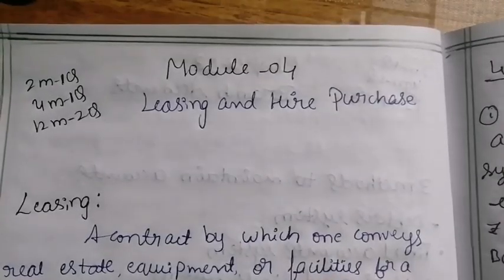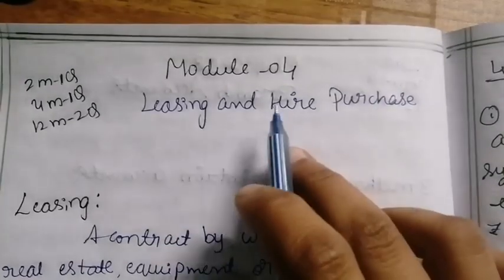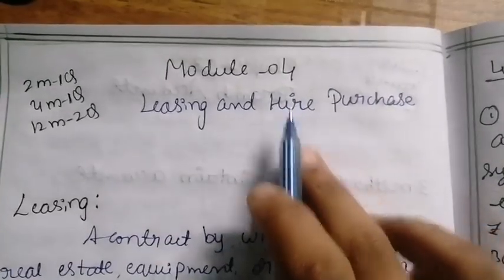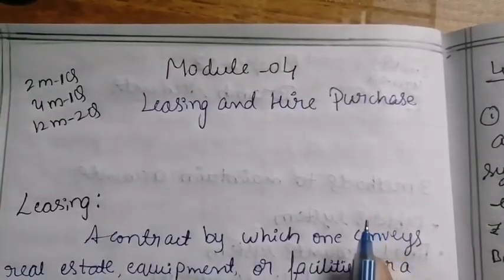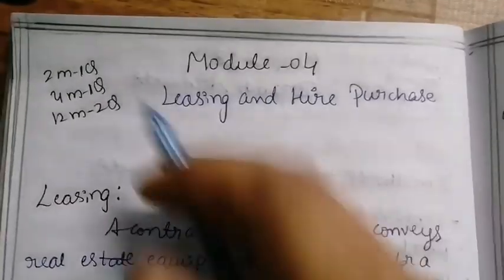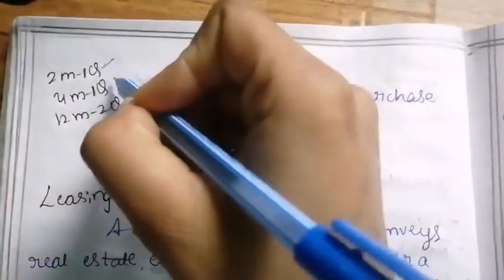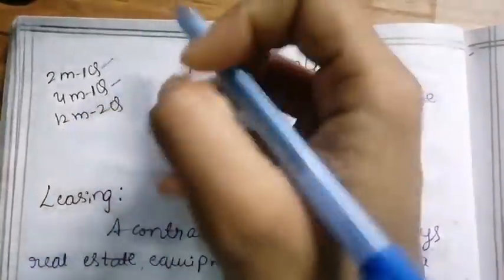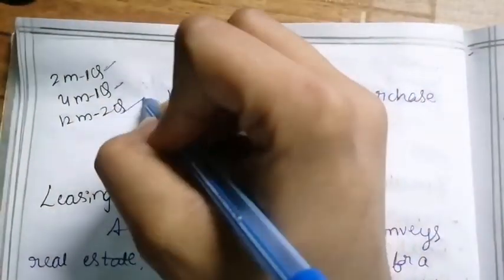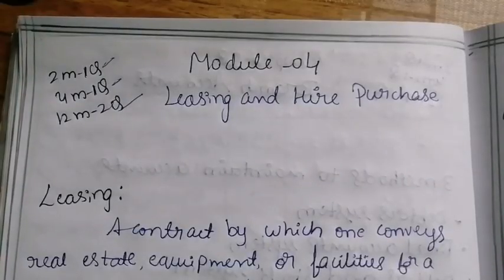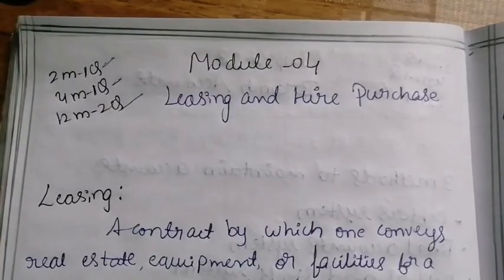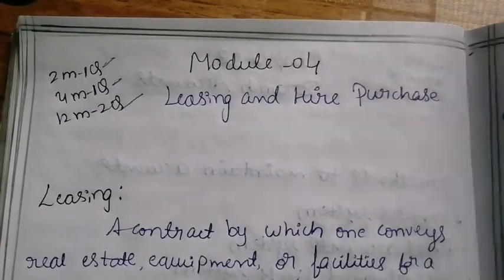In this video, let us see Module 4: Leasing and Hire Purchase of Financial Accounting. In this chapter, they will ask 2 marks 1 question, 4 marks 1 question, and 12 marks 2 questions. For 2 marks, 2 questions will be asked as in each chapter.